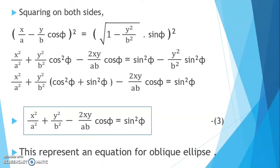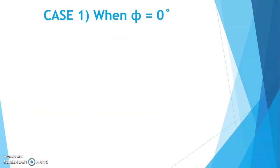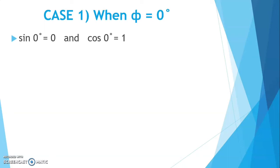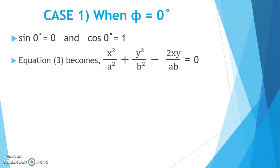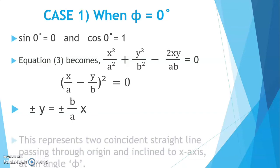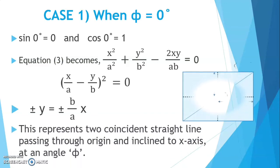This represents an equation for an oblique ellipse, which is the resultant path of the particle. Hence, we consider the following important cases. Case 1: when φ equals to 0, that is, when the two vibrations are in the same phase, we get sin(0) = 0 and cos(0) = 1. In this case, equation 3 becomes x²/A² + y²/B² − 2xy/(AB) = 0. This is similar to the expansion of (x/A − y/B)² = 0, which can be written as y = ±(B/A)·x. This represents two coincident straight lines passing through the origin and inclined to the x-axis.